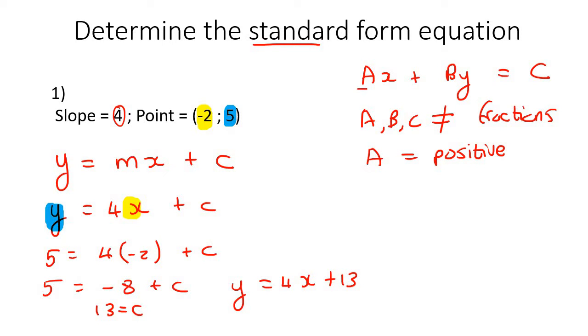So remember, to get standard form, you want to put your X and Ys on the left-hand side. So I'm going to take this 4X over. I'm going to put it in the front. So we end up with minus 4X plus Y equals 13. Then we also don't want A to be negative. We want A to be positive. So what we then do is we just divide throughout with negative 1. So we can actually just change everything. So this one changes to 4X. This one changes to negative Y. And this one changes to negative 13. Now, we are in standard form.